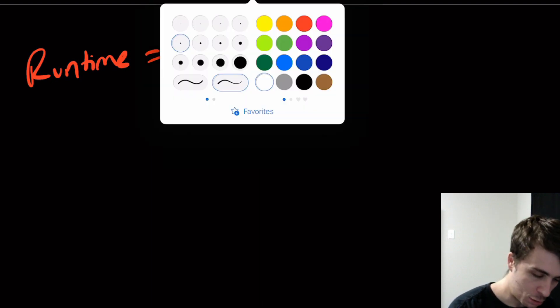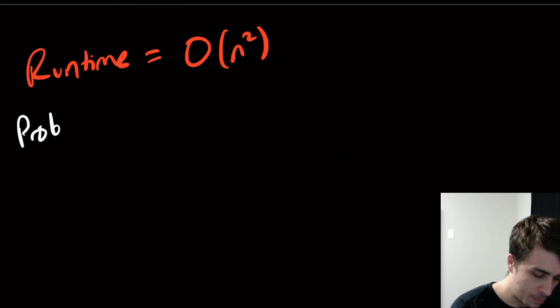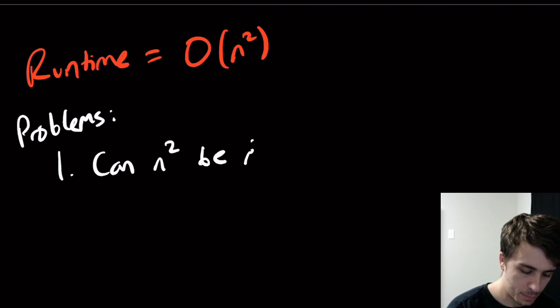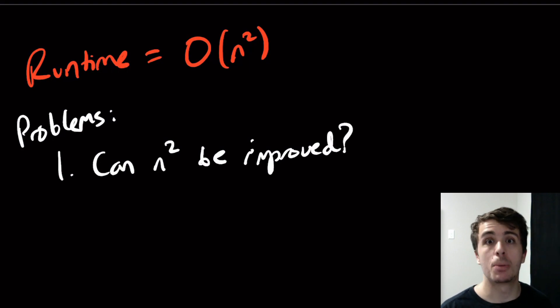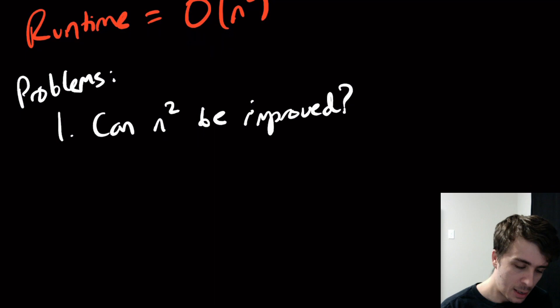So what are some problems that we can do here? One: can n squared be improved? So is it possible that I can get faster than n squared time? It actually might not be possible. I'm not exactly sure, but I'm interested to hear what you guys think.